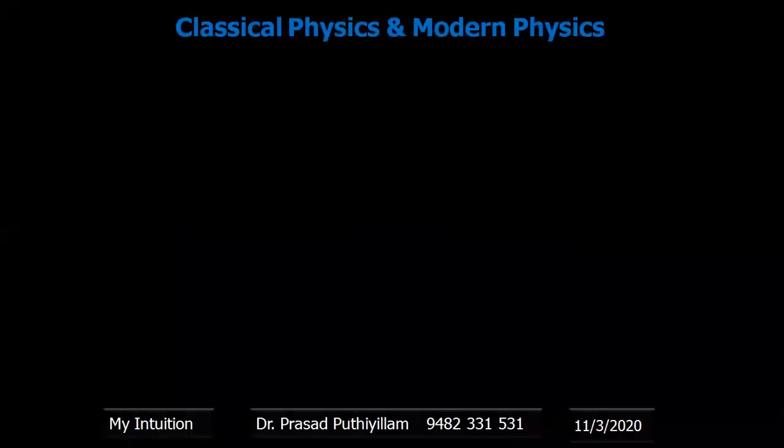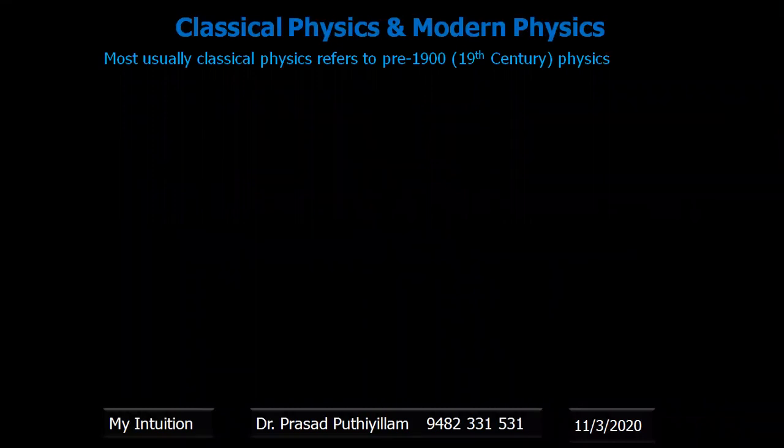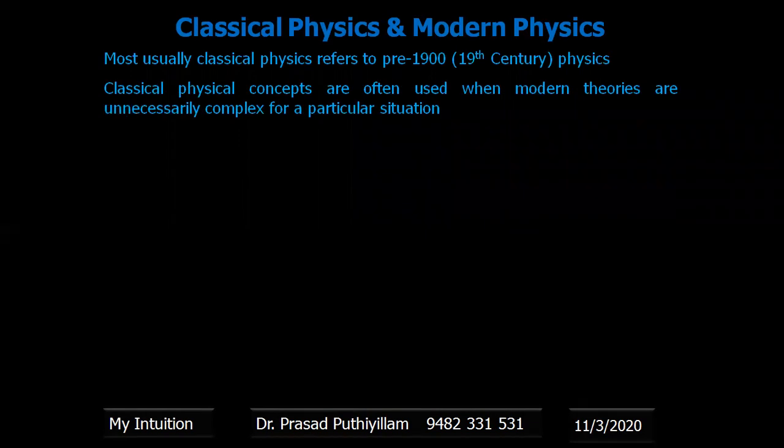Classical physics most usually refers to 19th century physics. Even now, classical physics concepts are often used when modern theories are unnecessary or complex for a particular situation.